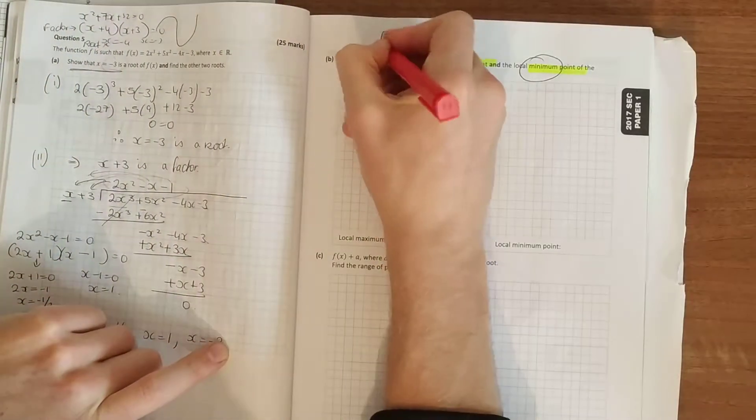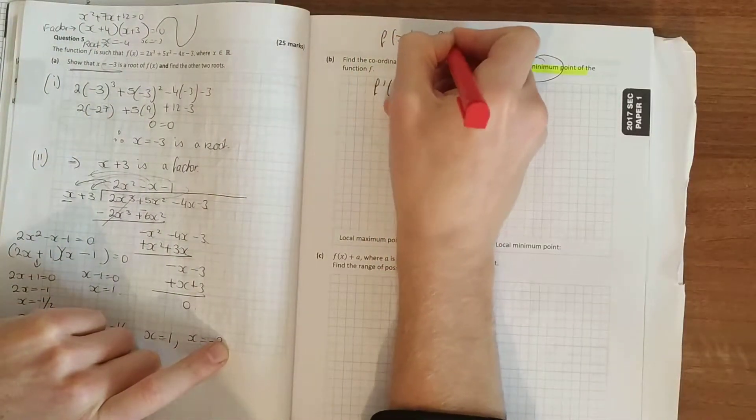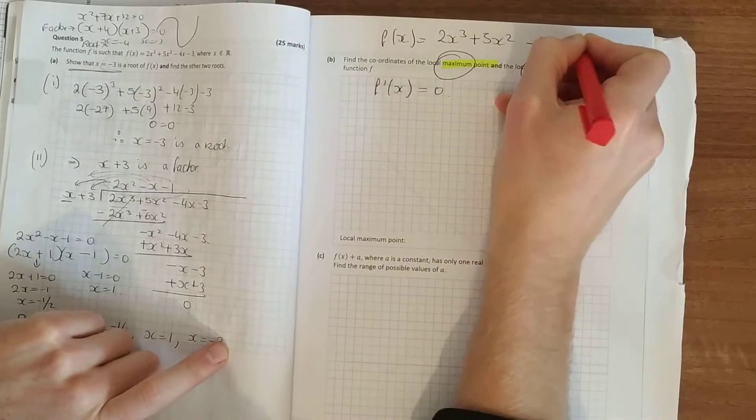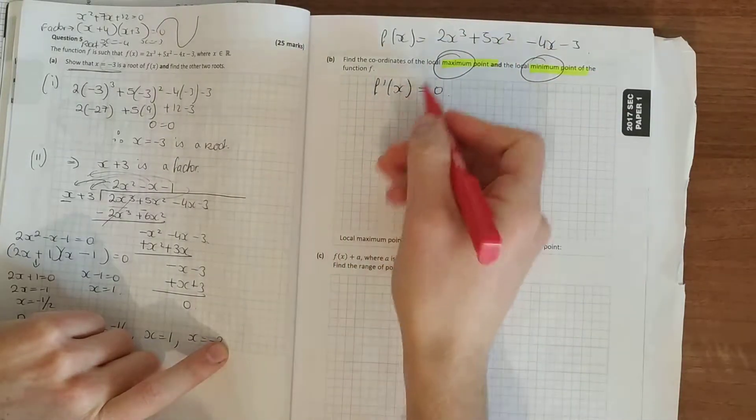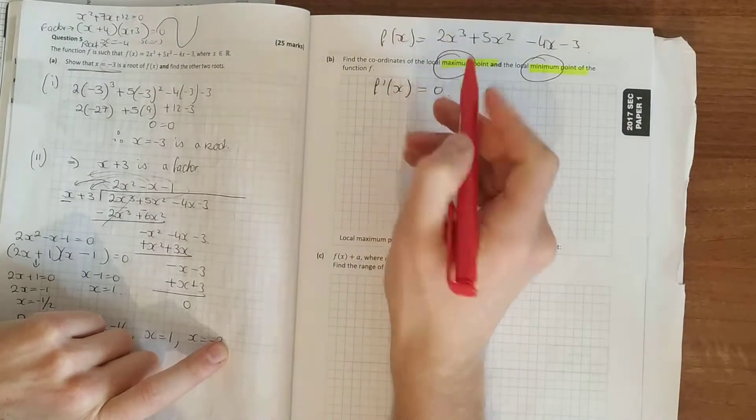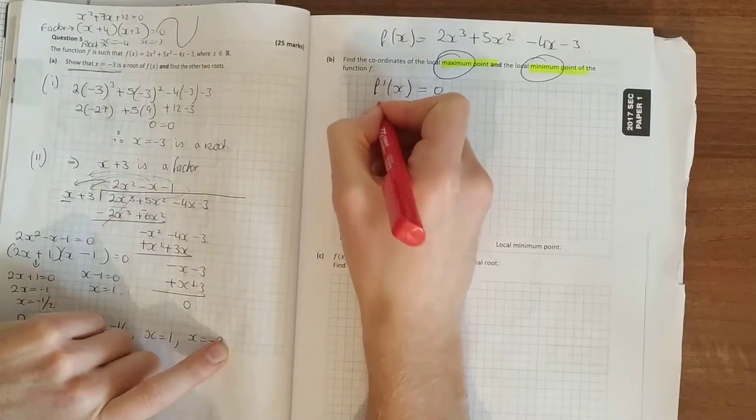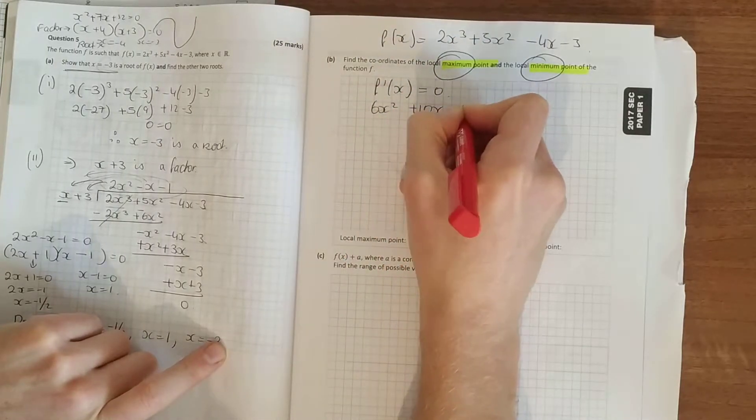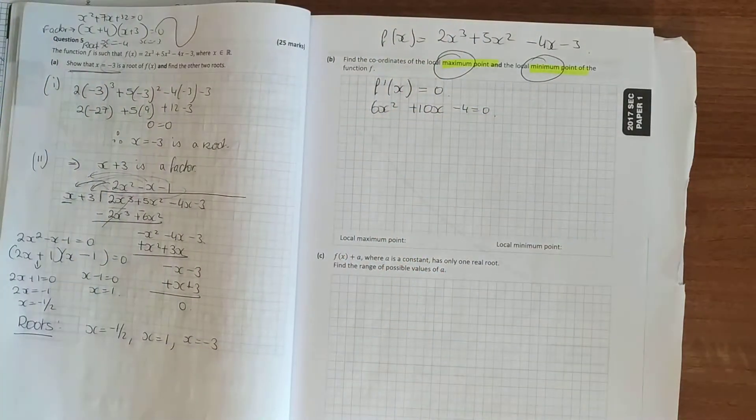So our function on the previous page, you see there was 2x cubed. dy/dx, differentiate that, so multiply down by the power. 3 times 2 is 6, reduce the power by 1. Plus 10x minus 4, let that equal to 0.